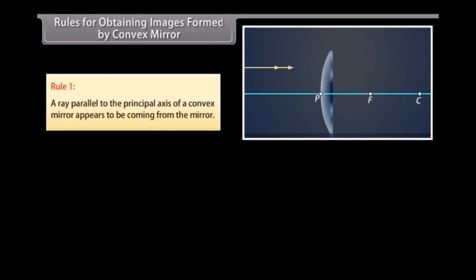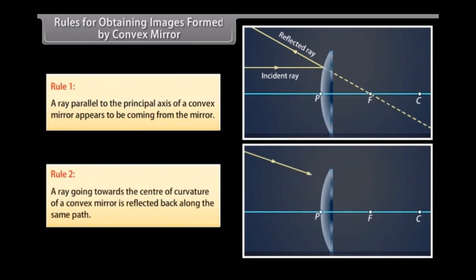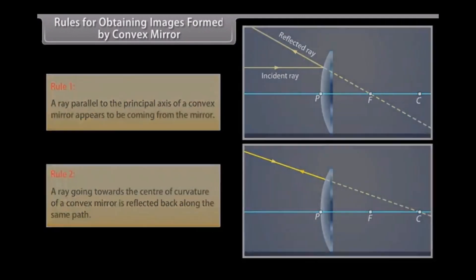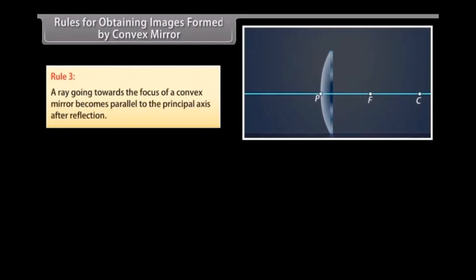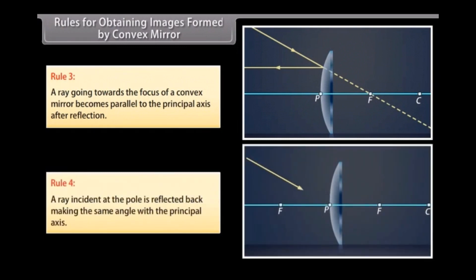Rules for obtaining images formed by convex mirrors: Rule 1 — a ray parallel to the principal axis appears to come from the focus behind the mirror. Rule 2 — a ray going towards the center of curvature is reflected back along the same path. Rule 3 — a ray going towards the focus becomes parallel to the principal axis after reflection. Rule 4 — a ray incident at the pole is reflected back making the same angle with the principal axis.